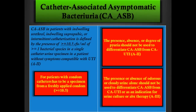Catheter-associated asymptomatic bacteriuria: in a patient with indwelling catheter, suprapubic, or intermittent catheter, it is defined by 10^5 of one or more bacterial species in a single catheter urine specimen in a patient without symptoms. For a condom catheter, the specimen must be drawn from a freshly applied condom, and the breakpoint is also 10^5.